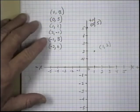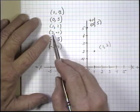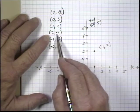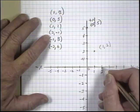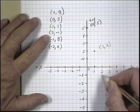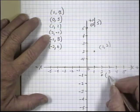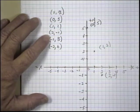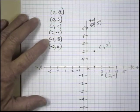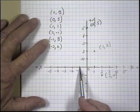And then our next point is (2, -1). x is going to be 2, y is going to be a -1. So find x equals 2. Here's 1, 2. y equals a -1, which is down here. This is our third point, (2, -1).